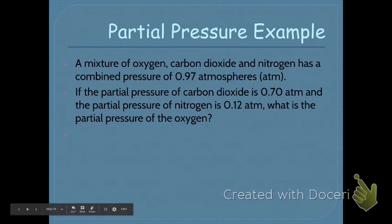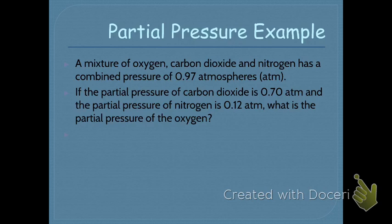For example: a mixture of oxygen, carbon dioxide, and nitrogen has a combined pressure of 0.97 atmospheres. So the total pressure equals the pressure of O2 plus the pressure of CO2 plus the pressure of N2. We know the total pressure is 0.97 atmospheres.